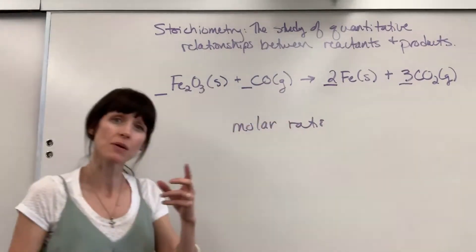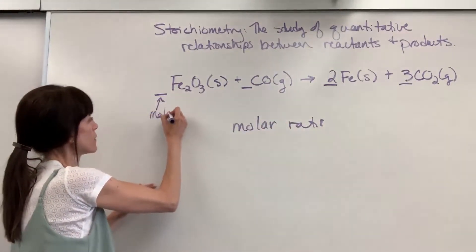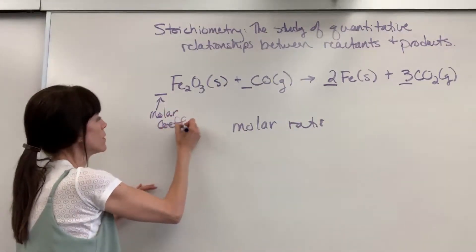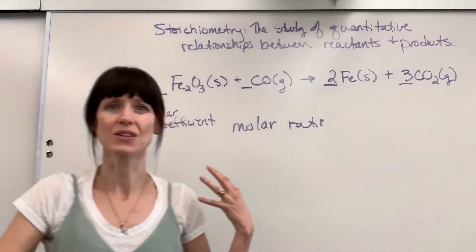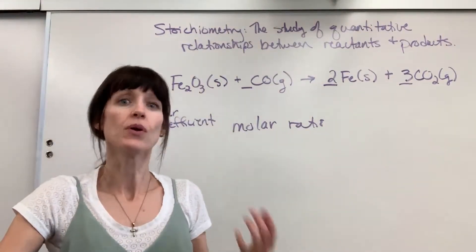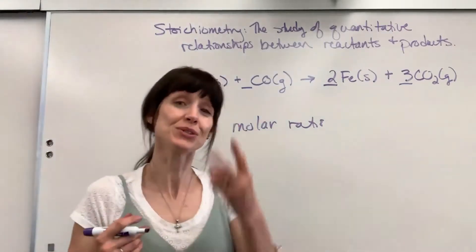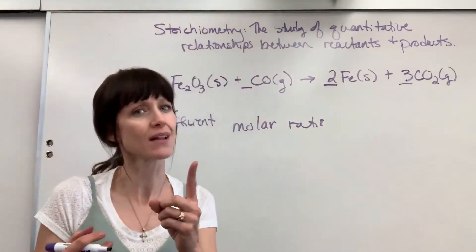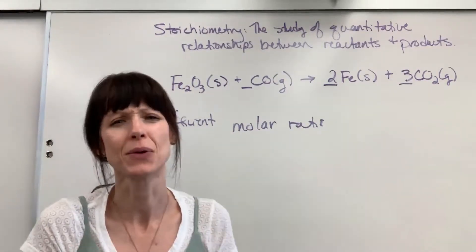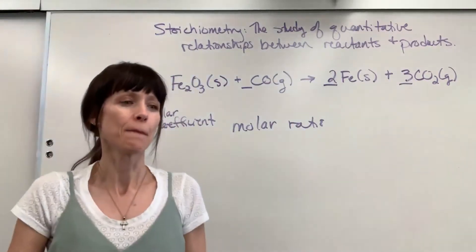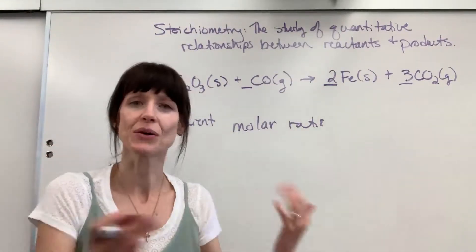These large numbers you'll recall are molar coefficients. Now before we look at these molar coefficients and the molar ratios, I want to give you an example with s'mores. Let's say that I want to make a s'more — it's going to take two graham crackers, one marshmallow, and three pieces of chocolate. And if I'm making you hungry, I'm sorry. So there's one s'more.